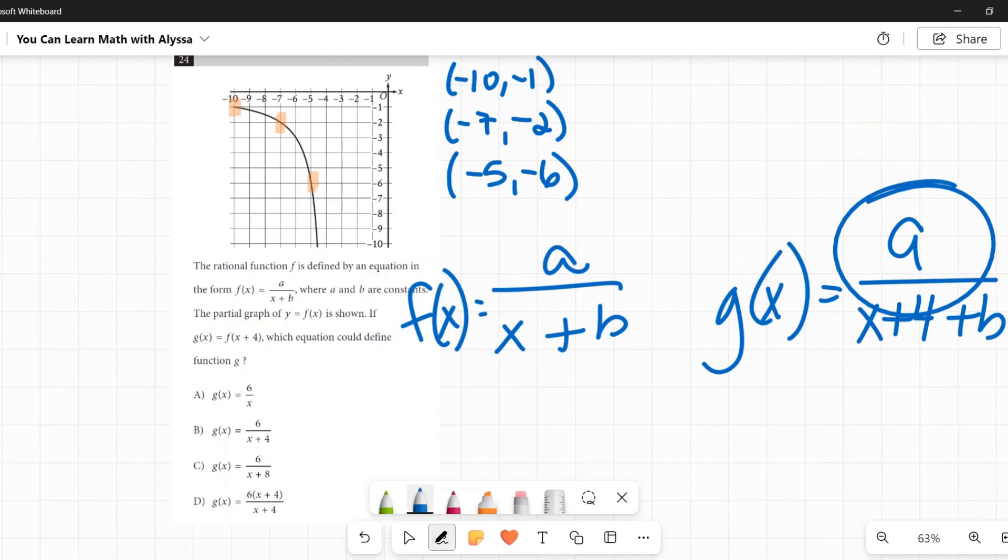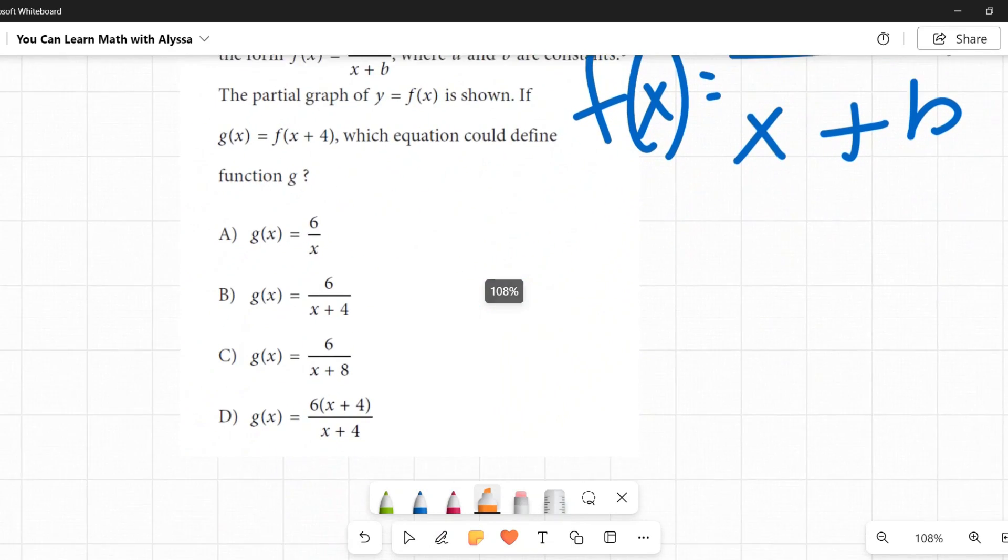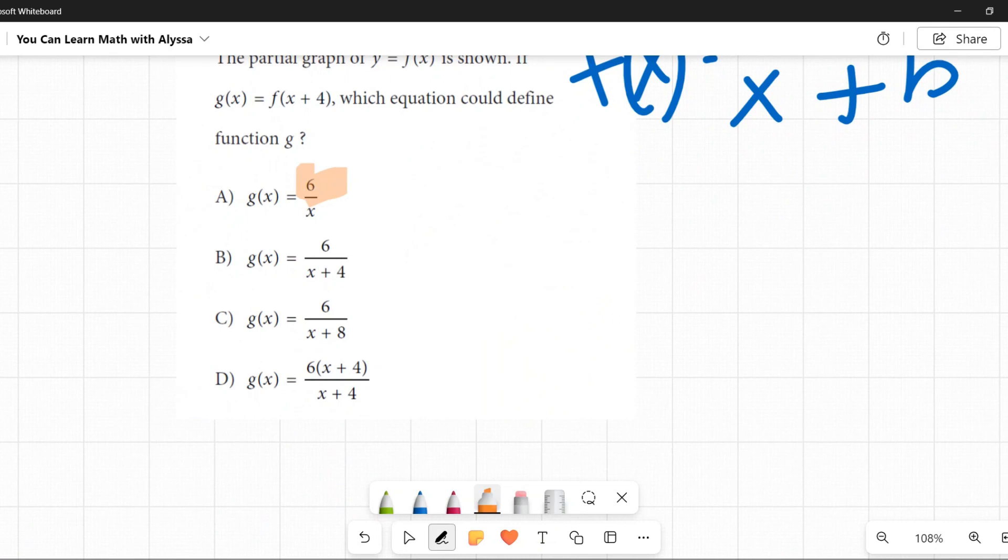So the a didn't change, right? The a stayed the same. This little thing on the bottom changed. Look at their answers down here. I'm going to zoom in so you can really see. I've got a 6, I've got a 6, I've got a 6, and I have a 6 times an x plus 4. So my sort of assumption, my logical assumption at that point is, the a on top, nothing's changing. You know, the only thing that's changing is on the bottom. So this one with the x plus 4 on the top, that seems ridiculous because I already know g of x is just going to be a over x plus 4 plus b.